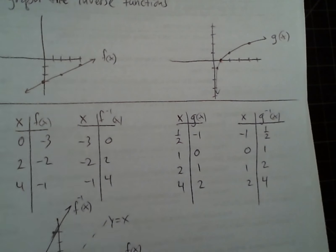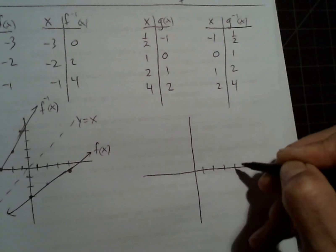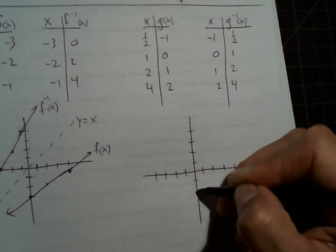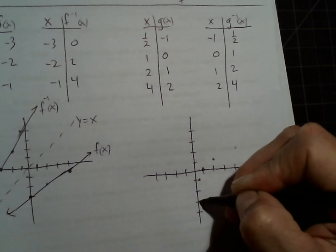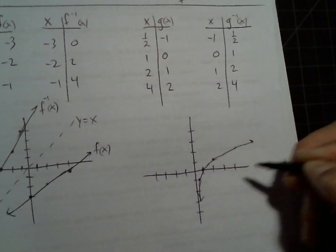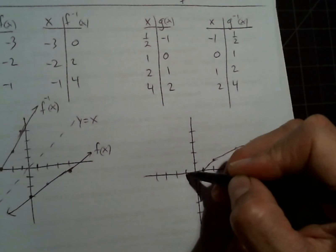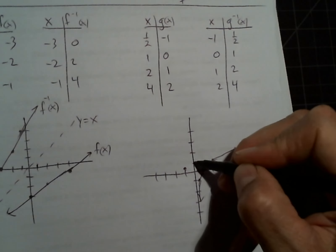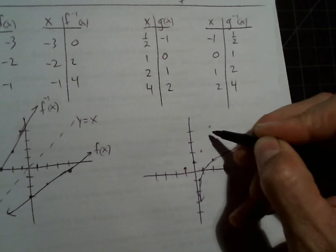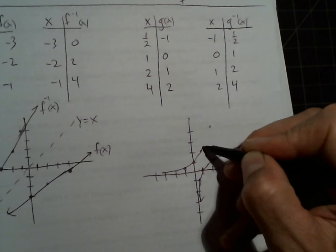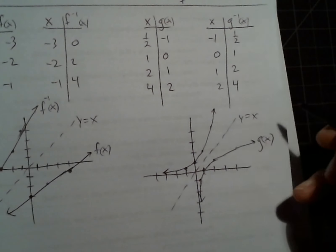Switch the coordinates for g of x, then graph the inverse. Points include negative 1, one-half; then 0, 1; then 1, 2; and 2, 4. That is symmetric to y equals x, so it's the inverse.